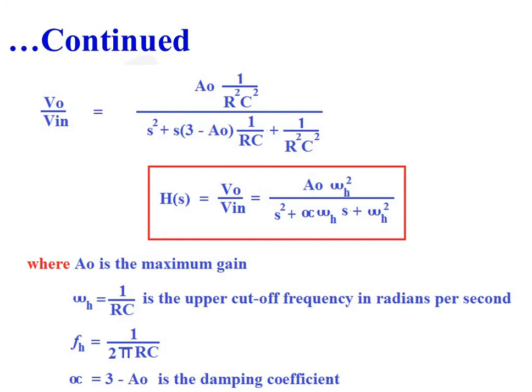Therefore, we can write H(s) = V0/VIN = A0·ωh² divided by s² + σ·ωh·s + ωh². Where A0 is the maximum gain, ωh = 1/RC is the upper cutoff frequency in radians per second, Fh = 1/(2πRC), and σ = 3 − A0 is the damping coefficient of the low pass filter.